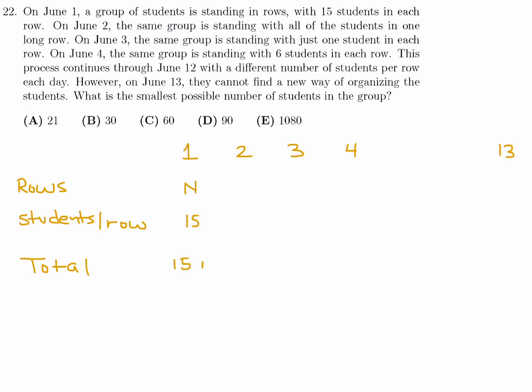They've told me that for June 1st, there's 15 students in each row. And let's just say there's n rows. So, that means the total number of students is 15 times n. On June 2nd, there's one big long row. So, one. And obviously, since the total number of students is the same, all of those students, which is 15 times n, are going to be in that one row. And then, on June 3rd, the students per row is one. That means there's 15n rows. 15 times n is the total. On June 4th, six students per row. That means there's 15n divided by six rows. And the total number of students is 15n. And so on.